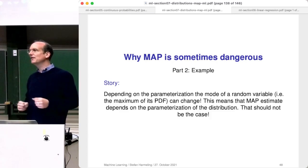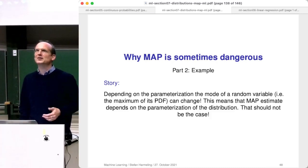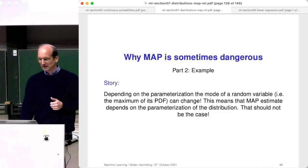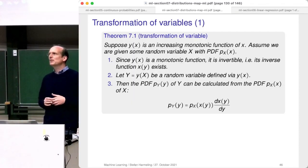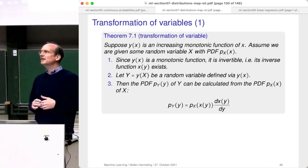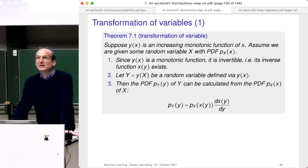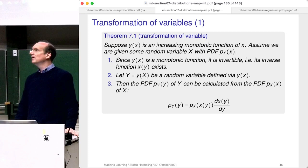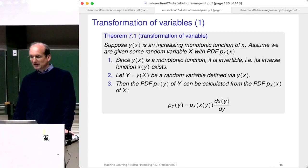You need to be careful and aware of these things. Let me talk about transformation of variables — a topic we haven't covered, and very natural for computer scientists. Suppose you have a random variable x and also have its PDF. Now suppose you have a computer program calculating y of x, transforming the random variable into something else. The natural question is: what is now the density of my transformed variable?